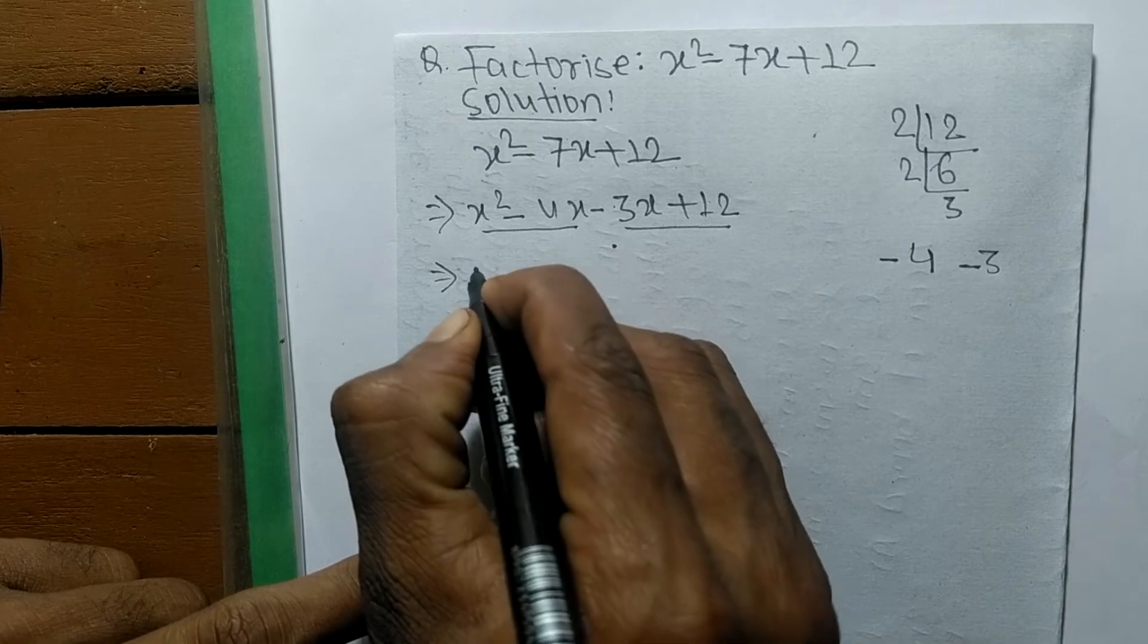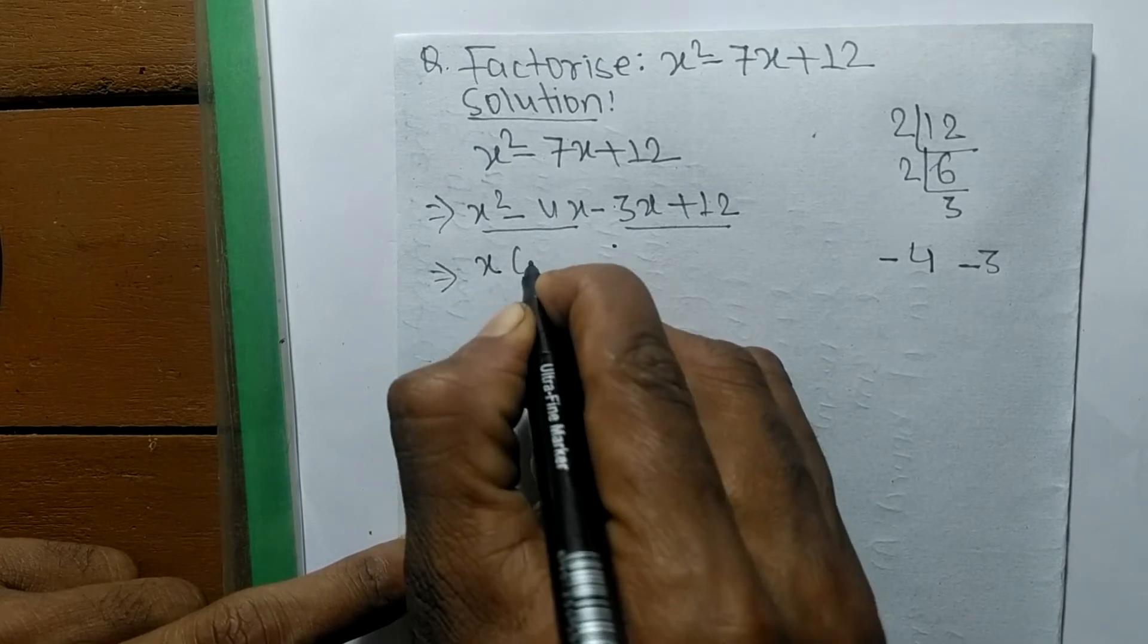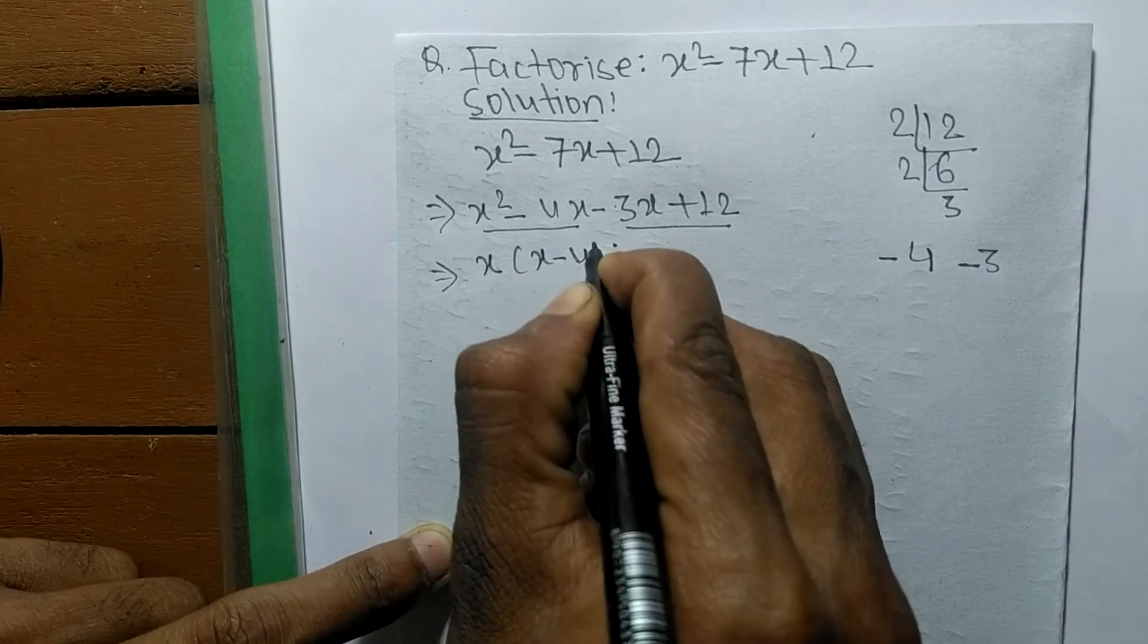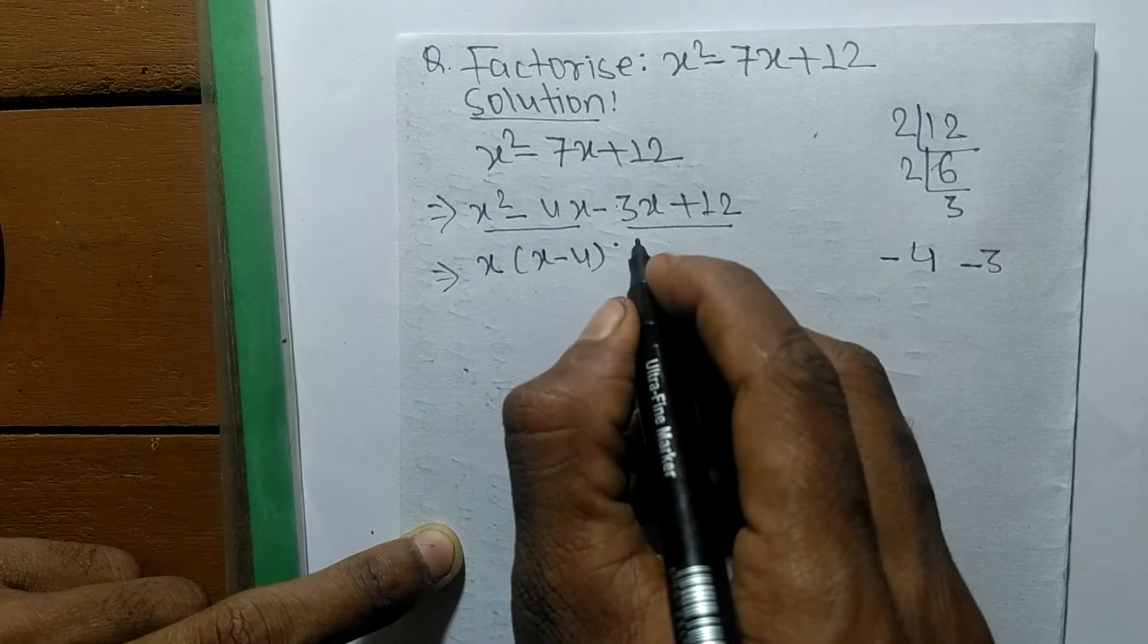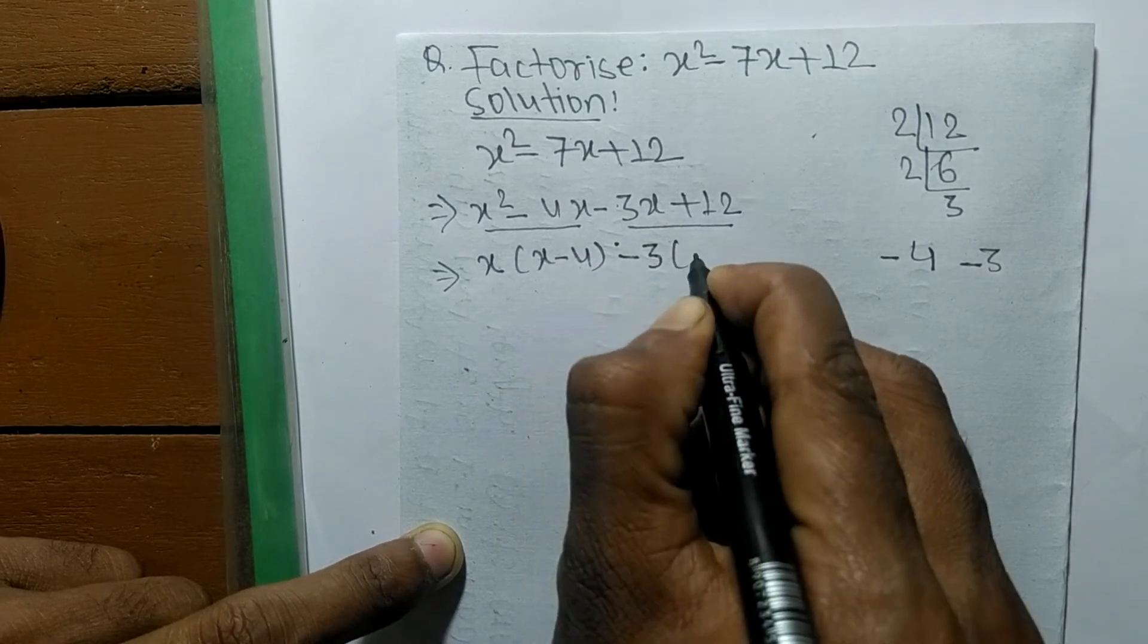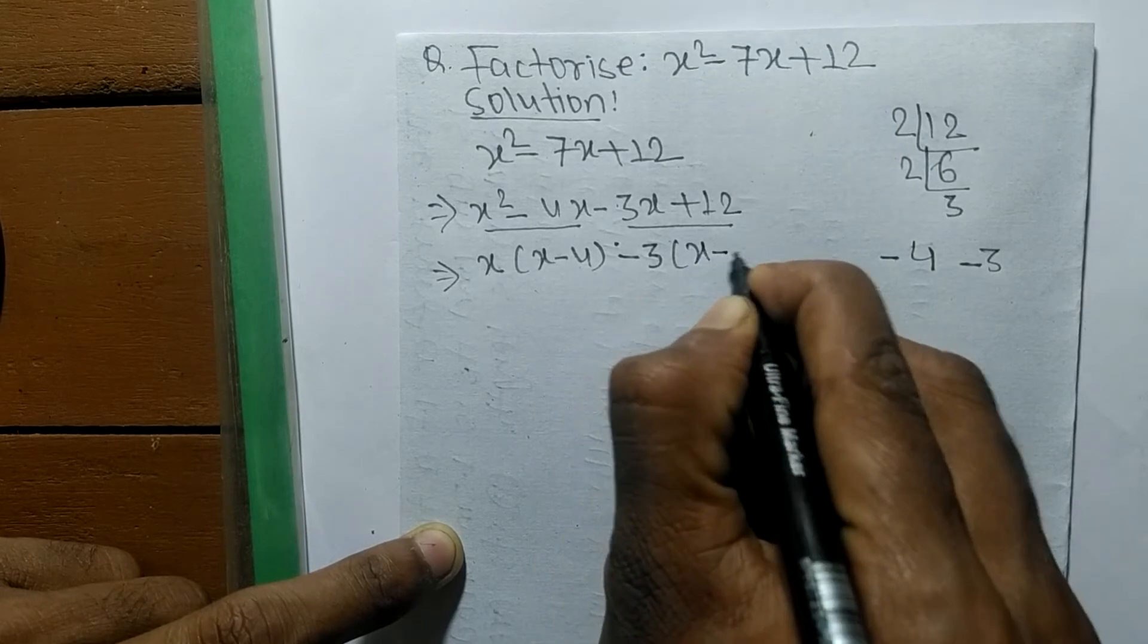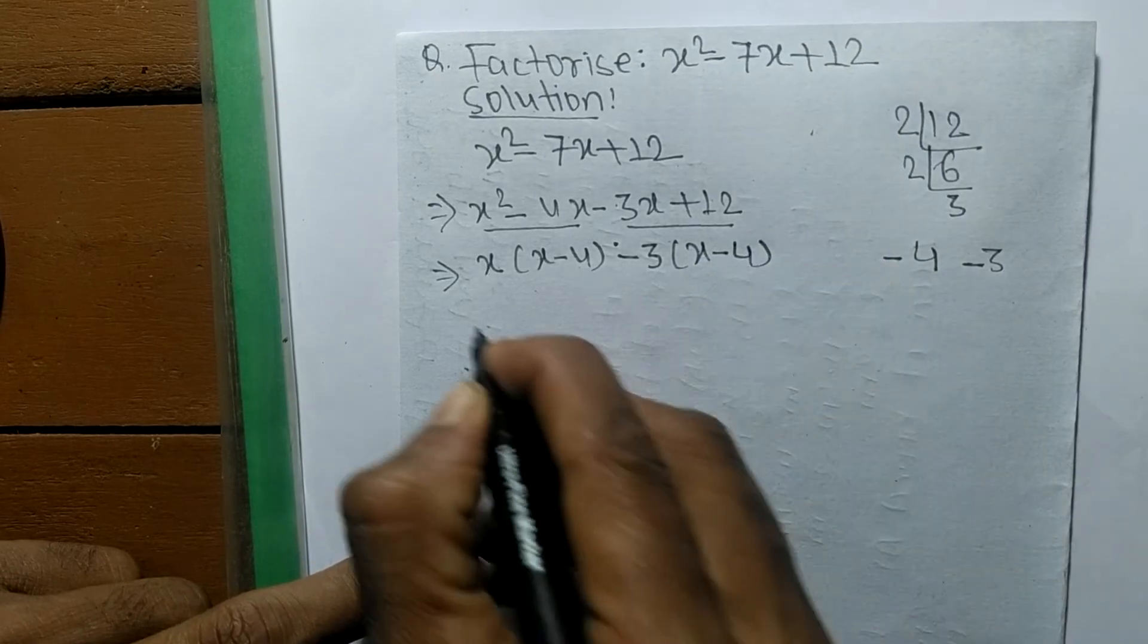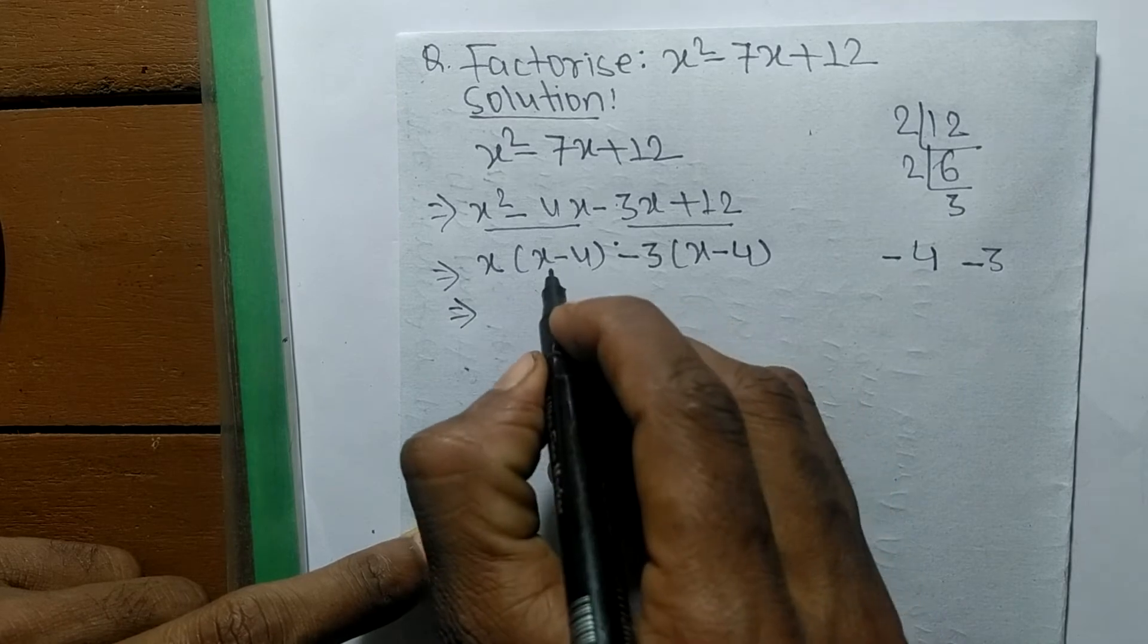In the first pair the common is x, so the remaining is (x - 4). In the second pair the common is -3, so the remaining is (x - 4).